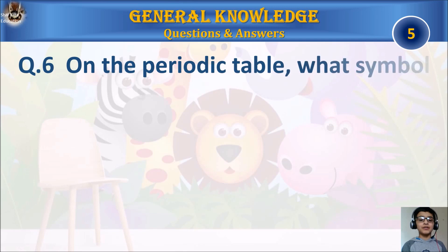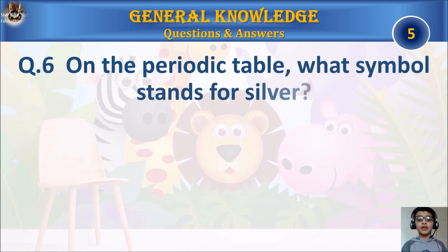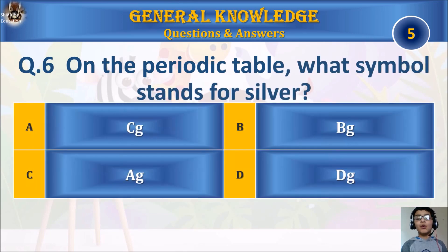Question 6: On the periodic table, what symbol stands for silver? A) CG, B) BG, C) AG, or D) DG? Your time starts.